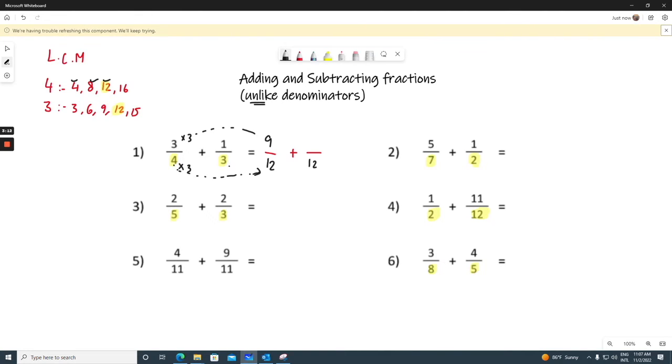Now, we'll check how our 3 became 12. We'll multiply it by 1, 2, 3, 4. And this also by 4. So 3 times 4 is 12, and 1 times 4 will be 4. Now you can see that the denominators are the same. We can add them. So 9 plus 4 is 13, and 12 will stay 12.